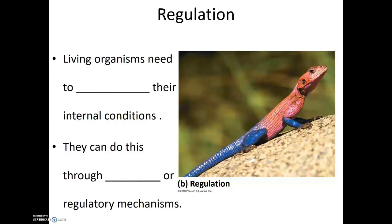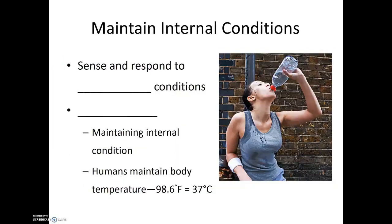Living organisms also need to maintain their internal conditions. They can do this through behavior or regulatory mechanisms. Living organisms need to be able to sense and respond to internal conditions. We call this maintenance of stable internal conditions homeostasis. One example of homeostasis in humans is thermoregulation, or the maintenance of our internal body temperature at approximately 98.6 degrees Fahrenheit.